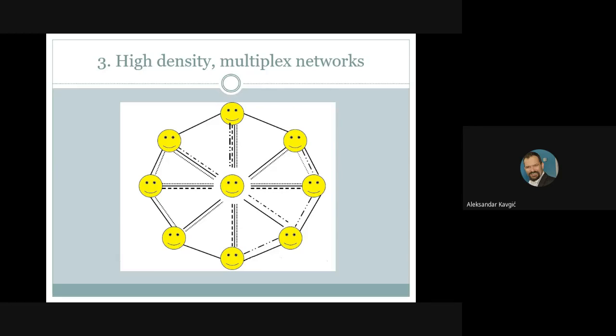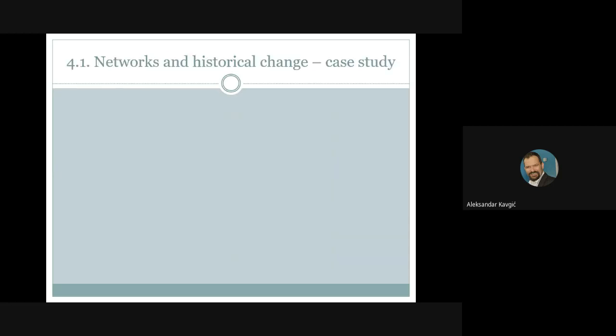A low density uniplex network would be like a Udemy course where nobody knows each other and they all know only the teacher. This course is more like a high density multiplex network, with multiple links between students and several different connections to the professor. There was one very interesting social network that brought about a very important change in the English language — a study on Southey and Coleridge's social circle, which you know from your courses in literature.